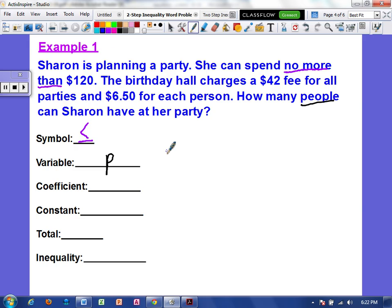The coefficient is the number multiplied. It says the birthday hall charges a $42 fee for all parties and $6.50 for each person. That word each is cluing us in that it's the multiplication. So the coefficient would be 6.50. So the constant would be $42. There's a $42 fee and a fee is added on to the cost.